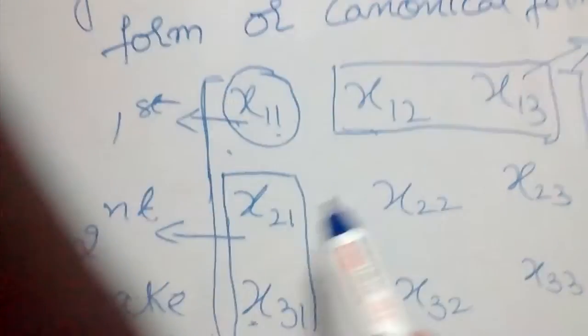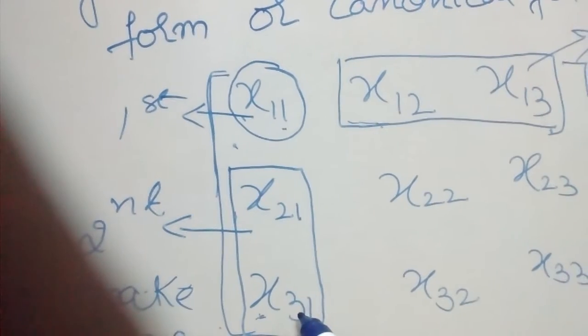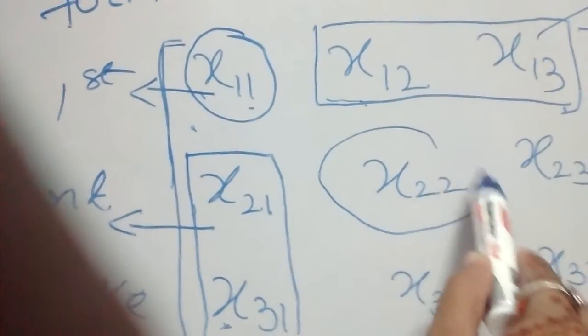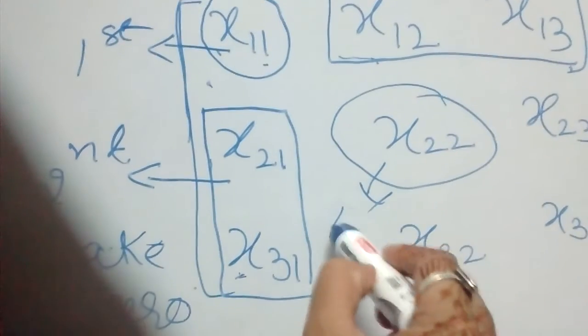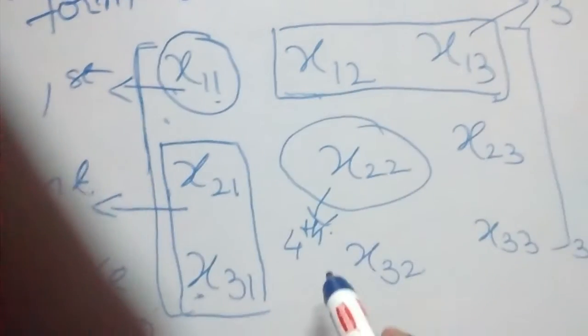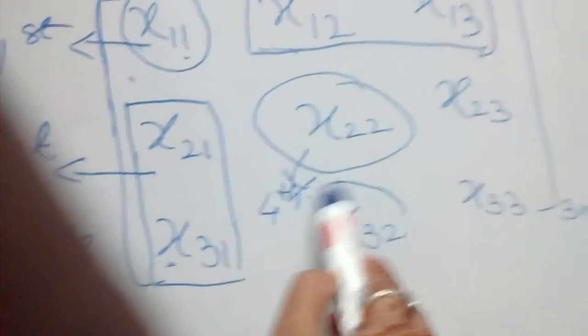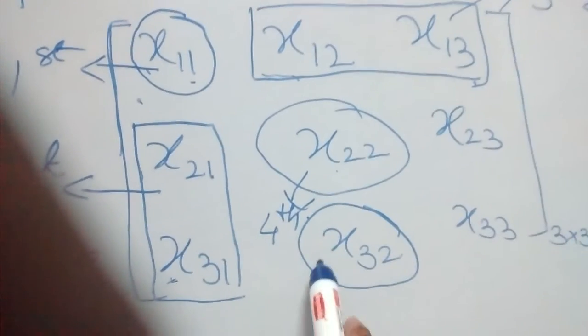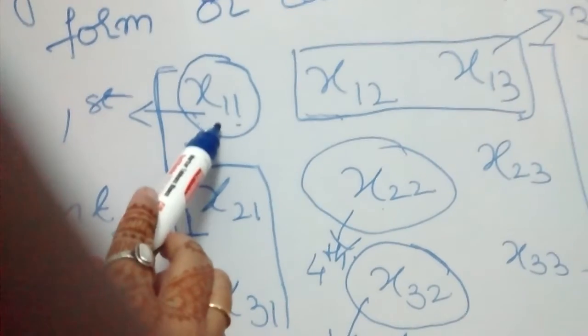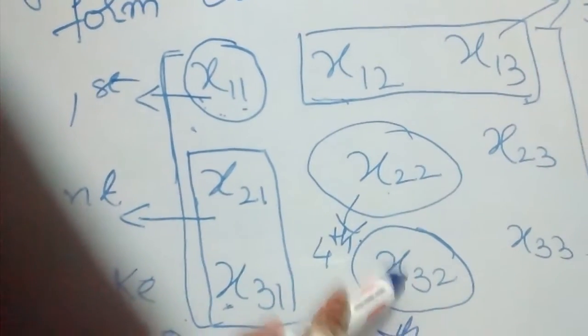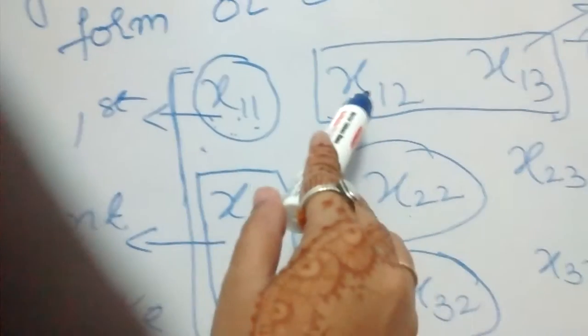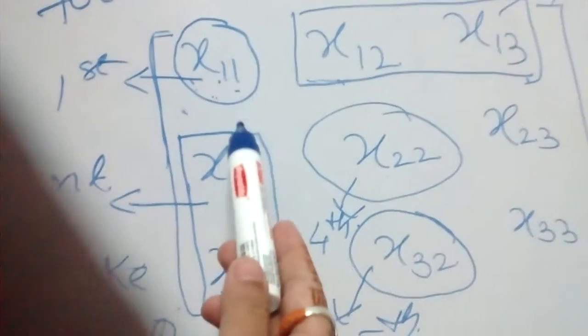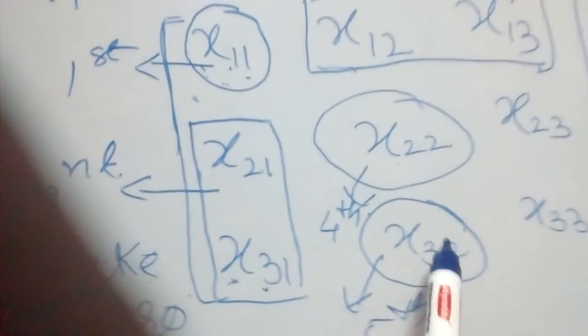We use column operations at this stage because when applying a column operation, the elements already made zero will not be affected. After that, the fourth step is to make the next diagonal element as 1. Then the fifth step: make the element above or below it as zero using row operations — but we cannot use the first row here, since doing so would affect the already-zero positions.